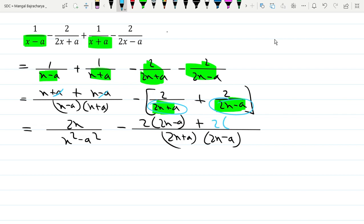I multiply 2 into 2x plus a, 2x, then x square minus a square as it is. So 4x minus 2a plus 4x plus 2a. Using a plus b into a minus b equals a square minus b square, so 2x square. 2x square, now we can write it as 2x square.